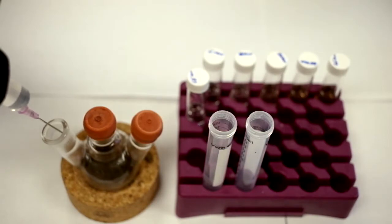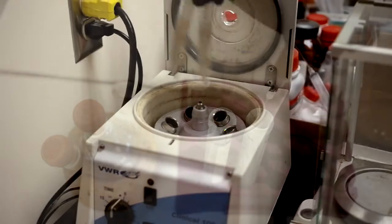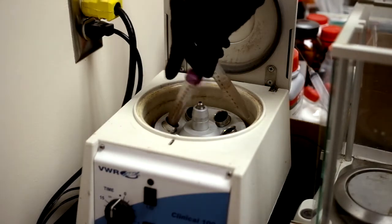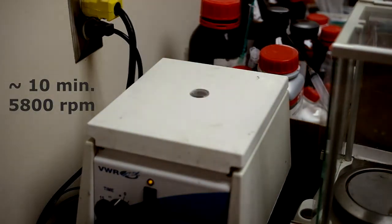Once the reaction flask is cooled to room temperature, we add 12 ml of ethanol and split between two centrifuge tubes, topping each off with ethanol. Shake the centrifuge tubes to mix and place into the centrifuge. Spin for about 10 minutes at 5800 RPM.